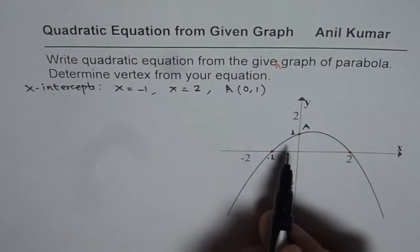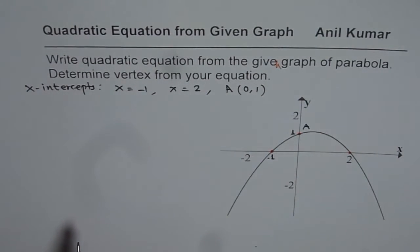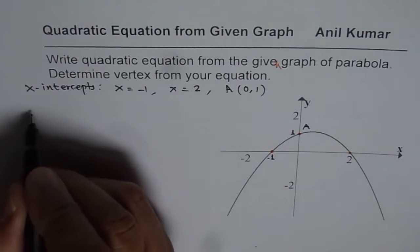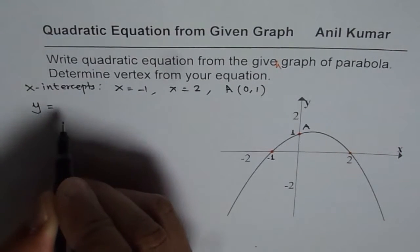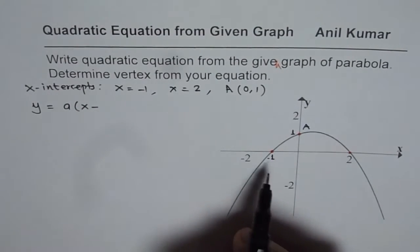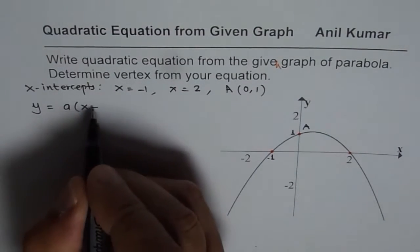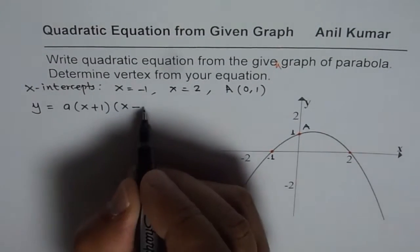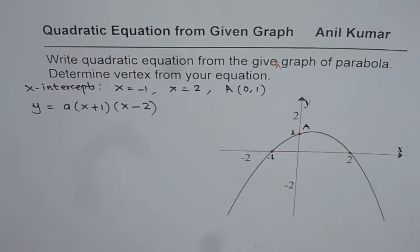We will use these points to find the given equation. You can also pause the video, try it out and then check with my solution. So in the intercept form we write equation as y equals A times x plus one times x minus two. So that gives us the equation. Let me call this equation as equation one.